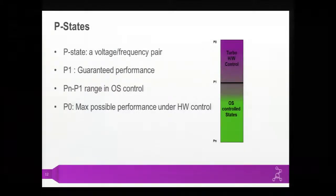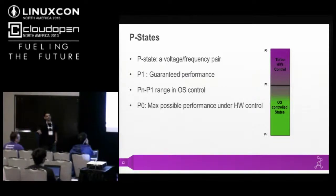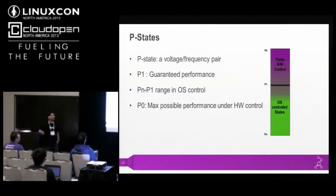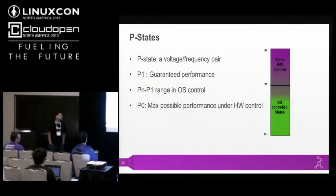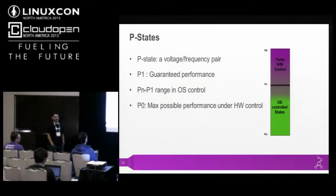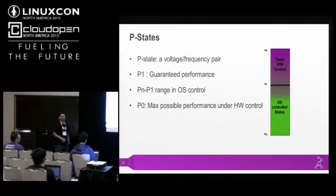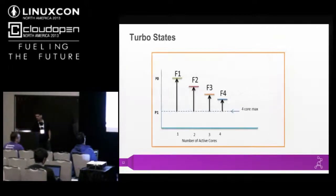Let us look at what is basically a P state. P states should not be confused with frequency. In an Intel processor, a P state is a voltage-frequency pair. The operational states from P1 to PN are basically under OS control — the OS can request any of those states. But between P1 and P0, that is called the turbo or hardware-controlled state range, which is totally under hardware discretion. As the number of cores increases, the number of sub-steps between P1 and P0 also increases.